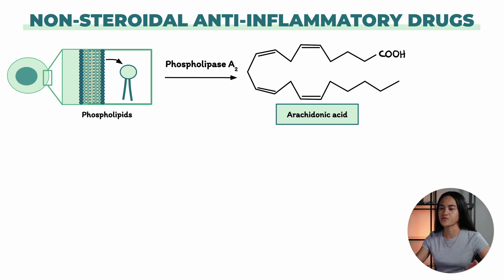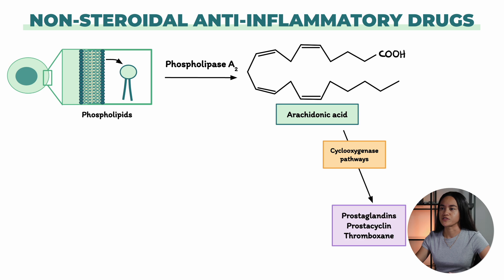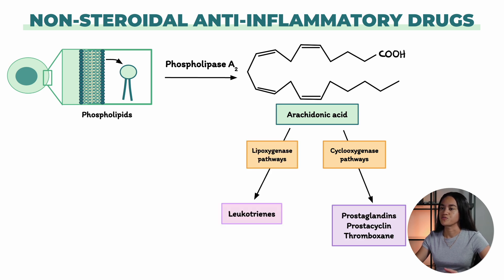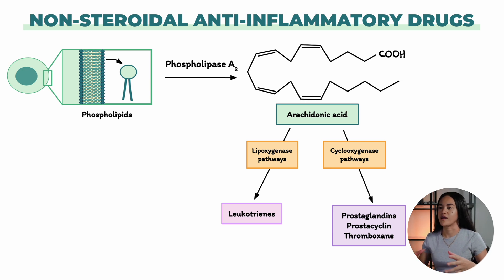These pathways include the cyclooxygenase pathway, which produces prostaglandins and thromboxanes, the lipoxygenase pathway, which produces leukotrienes, and other enzymatic pathways which create additional metabolites, which we won't go through in this lecture.